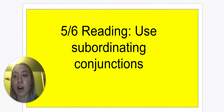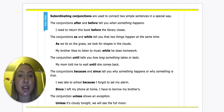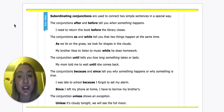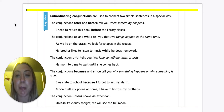Let's go over our subordinating conjunctions. These conjunctions are used to connect two simple sentences, but it's done in a special way. The conjunctions 'after' and 'before' tell you when something happens. For example: I need to return this book before the library closes — they need to return it before this happens.